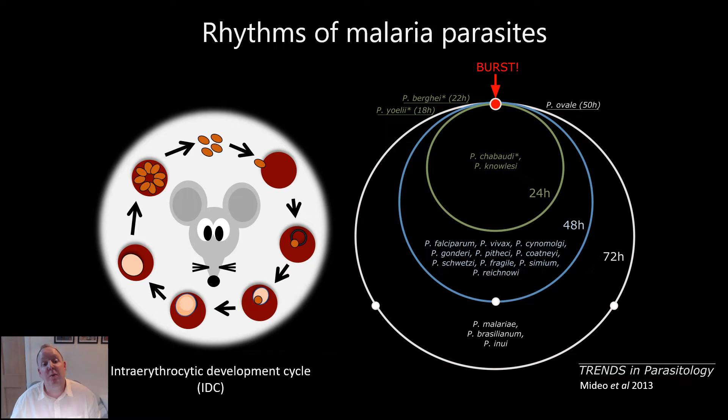It's this cycle that's responsible for disease symptoms of the host. The rodent species we study have an IDC of 24 hours.